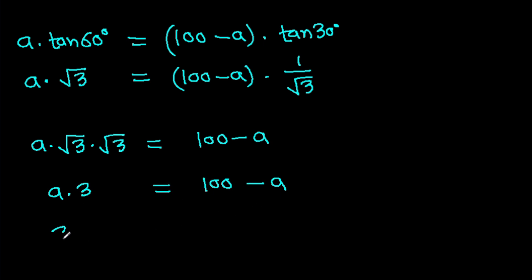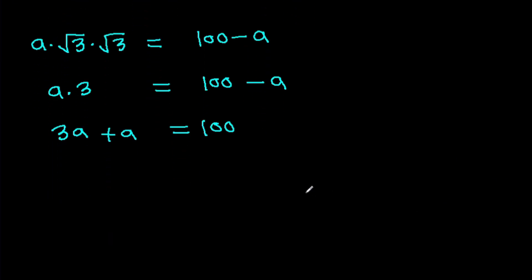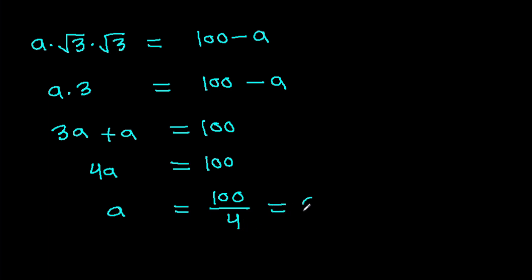So 3A equals 100 minus A. Then 3A plus A equals 100, giving 4A equals 100. So A will be 100 over 4, that will be 25.